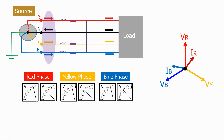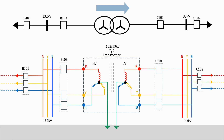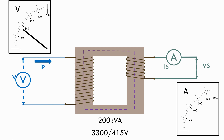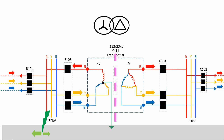We then focus on ground faults and get back to basics to look at what happens on the network when a ground fault occurs. The transformer impedance dictates the level of the ground fault current, and we will see how we measure this value before looking at how various different ground faults flow around a typical electrical network.